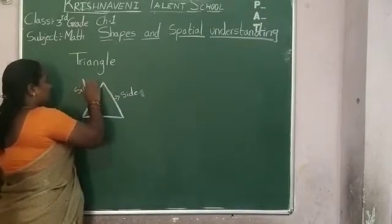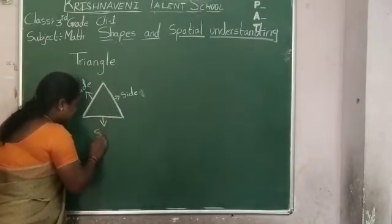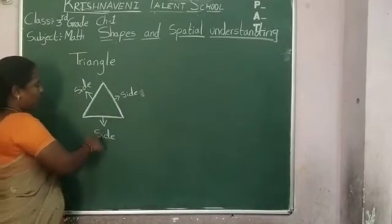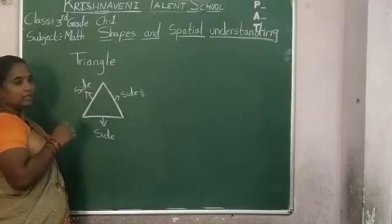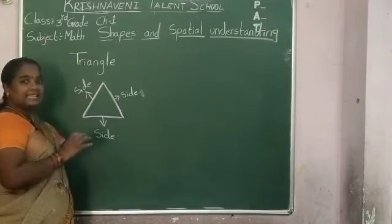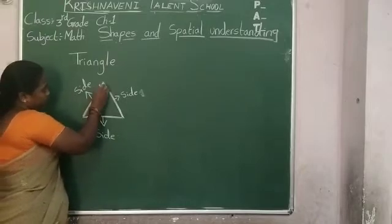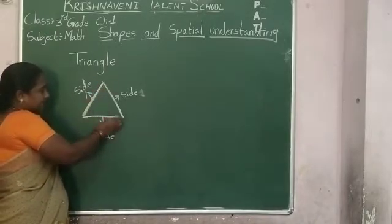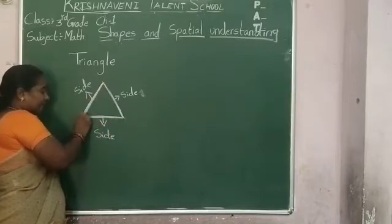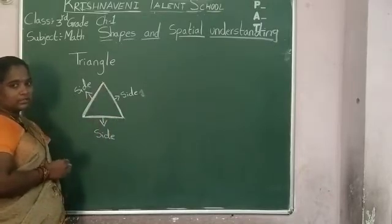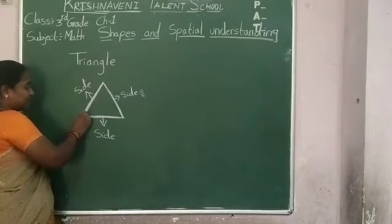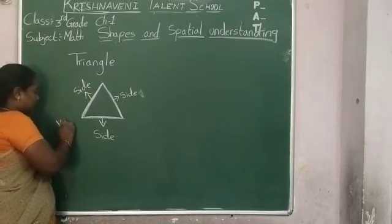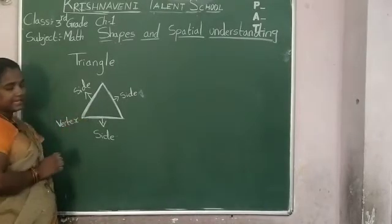So how many sides does a triangle have? 1, 2, 3. A triangle has 3 sides. This side and this side meet at a common end point, and you get a corner. This corner is called a vertex.